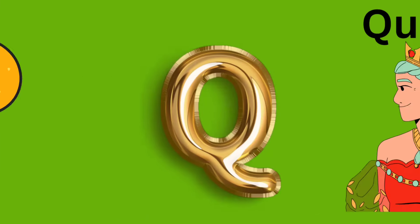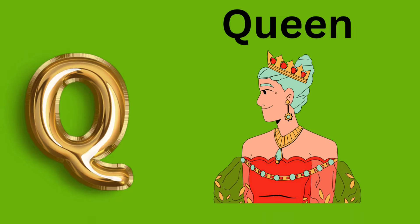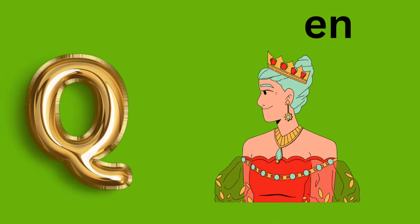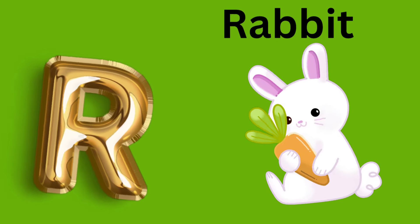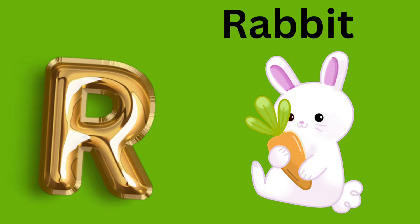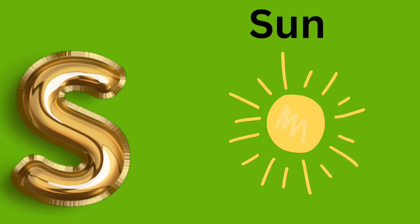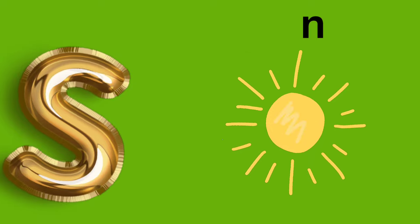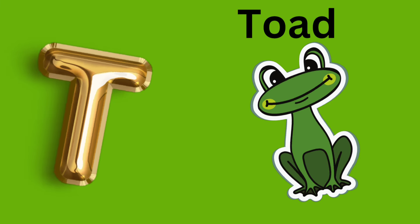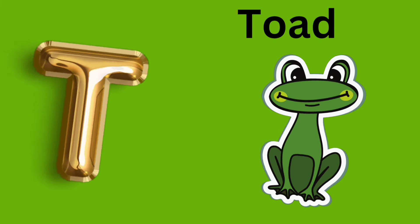Q is for Queen. K, K, Queen. R is for Rabbit. R, R, Rabbit. S is for Sun. S, S, Sun. T is for Toad. T, T, Toad.